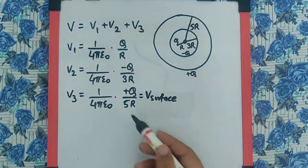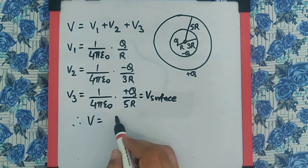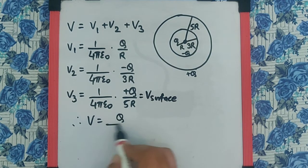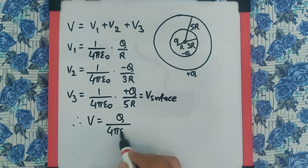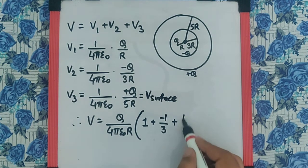So, once we get all the potential, we can directly just add them. We get V as, I think we can take q upon 4pi epsilon 0 r common. In the bracket, we will be left with 1 plus negative 1 by 3 plus 1 by 5.